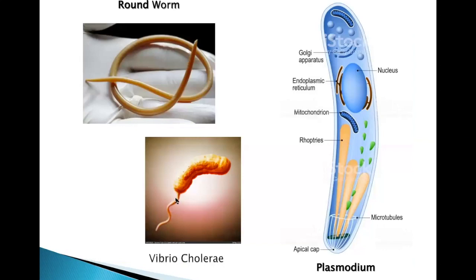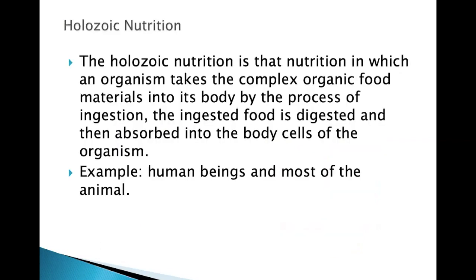Other parasites include roundworms, the bacterium Vibrio cholerae, and the protozoan Plasmodium. Vibrio cholerae causes diseases like diarrhea. Plasmodium causes malaria; it is found mainly in female Anopheles mosquitoes. When such a mosquito bites a person, it passes on the Plasmodium, which then attacks the red blood cells. Roundworms live in the intestine of human beings.